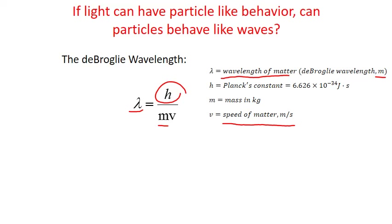In order for these units to cancel out and give us meters for our wavelength, we actually need to use an expanded unit for joules. It turns out that one joule is actually equal to a kilogram times meters squared divided by seconds squared. When we use this expanded unit for joule, what you'll find is that our kilograms will cancel out, our seconds will cancel out, and one of our meters cancels out to leave us with a final unit of meters for the de Broglie wavelength.